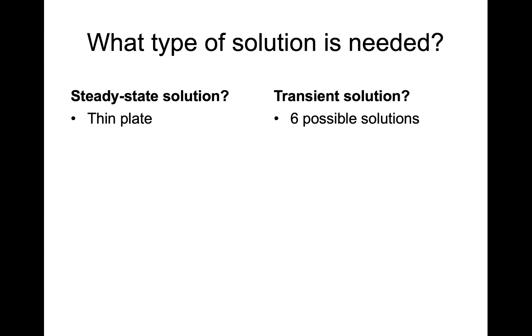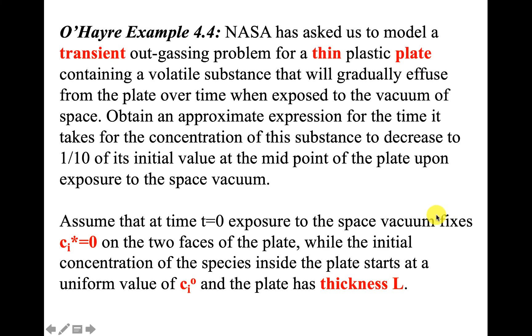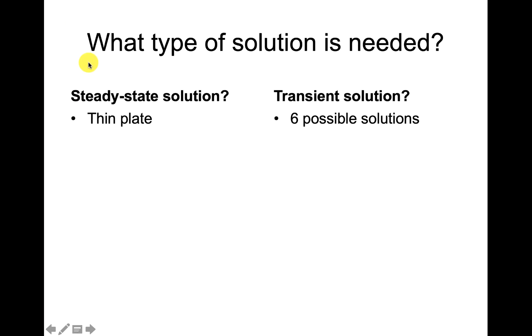We specifically derived only one of the cases for the steady-state solution, this was a thin plate. We also looked at six possible solutions for the transient solution, so we need to identify which one. If we go back to our word problem, we see that it specifies that we want the transient solution, so that tells us we need one of these six solutions.